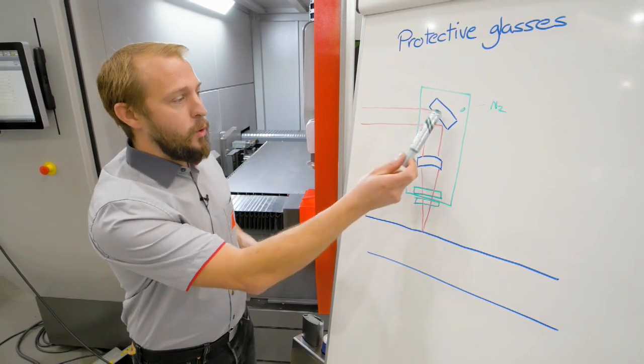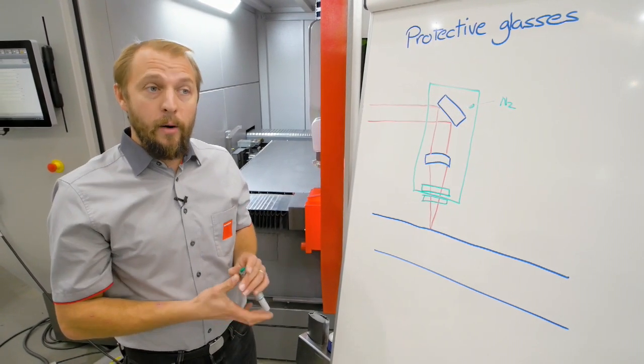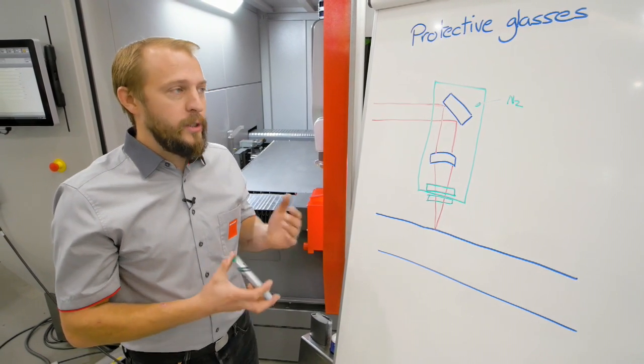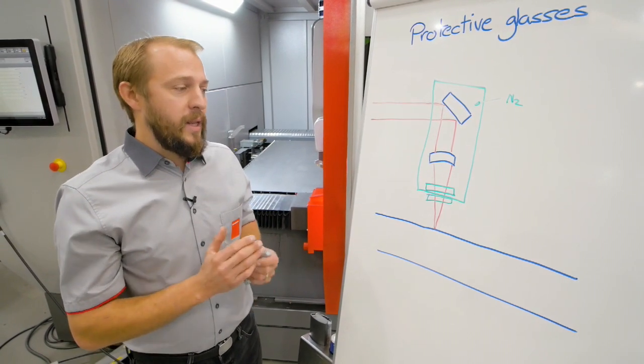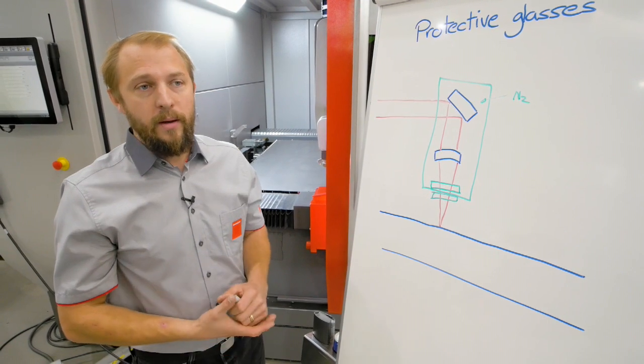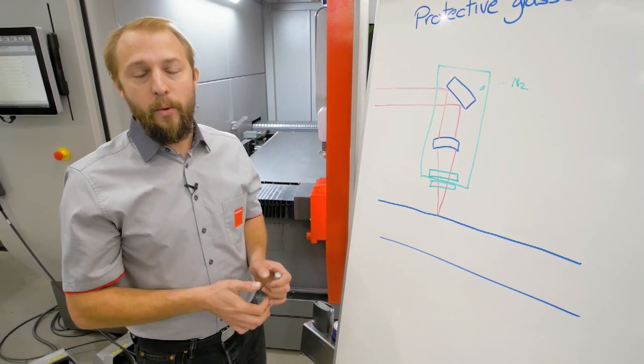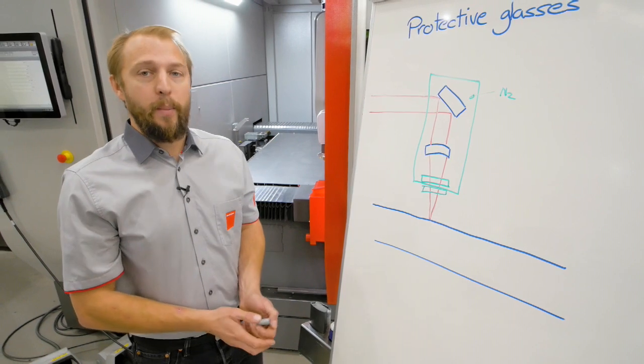All the optical components in this cutting head are monitored and controlled. As soon as there is any contamination on them, we will get a warning. Or if it's too badly contaminated, we will get an error and the machine will stop cutting.